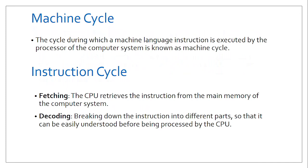Having understood the various communications within the processor, we need to understand how processing actually happens. We have different cycles. Before the main cycle — the instruction cycle — we have the machine cycle. Before a computer processes any given data, it has to understand it, meaning it converts data to machine language — ones and zeros — before it actually starts processing. The main cycle is the instruction cycle, where the fetching happens. The processor fetches or retrieves instructions from main memory before it actually processes them.